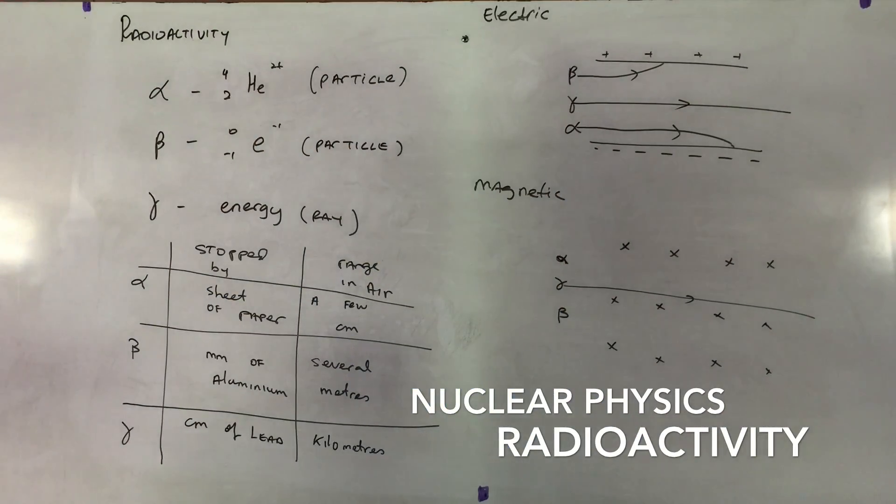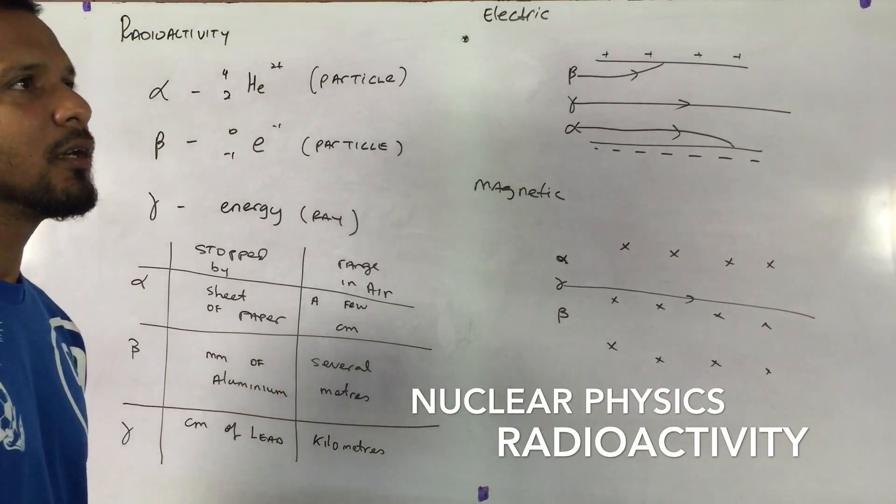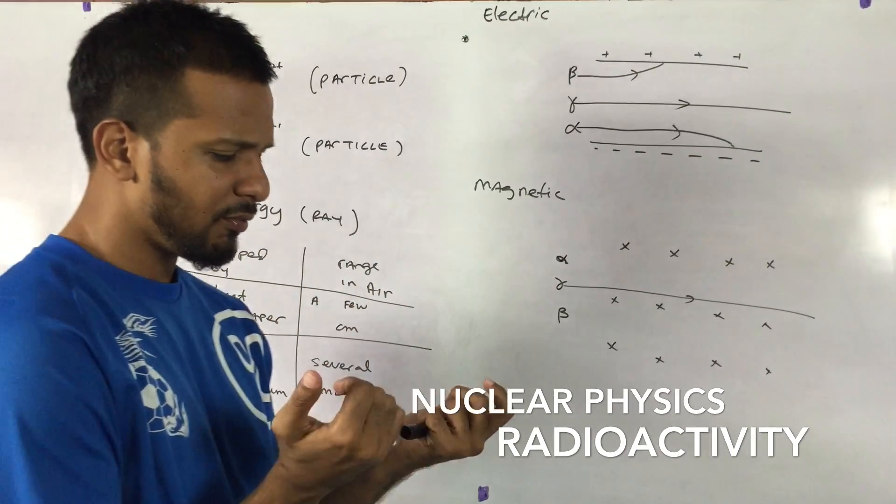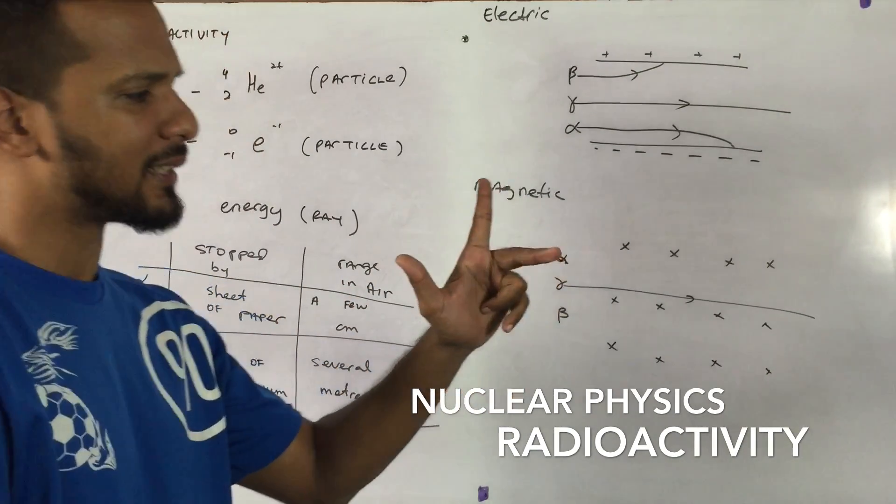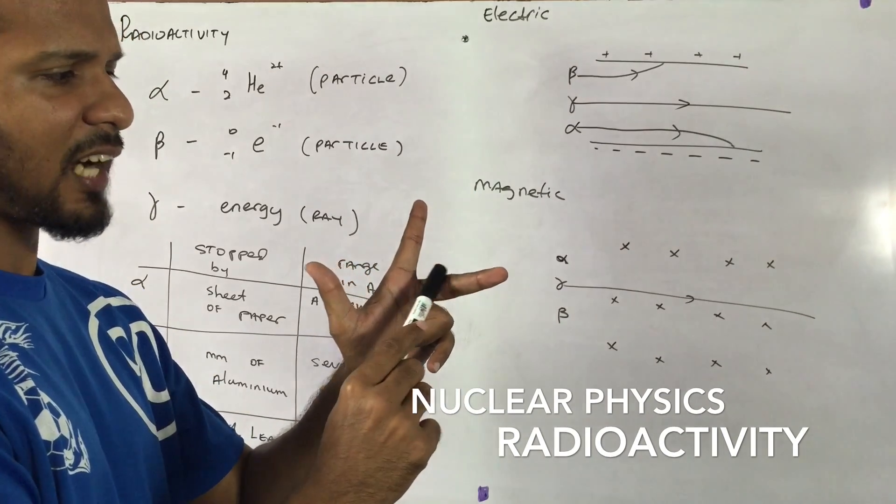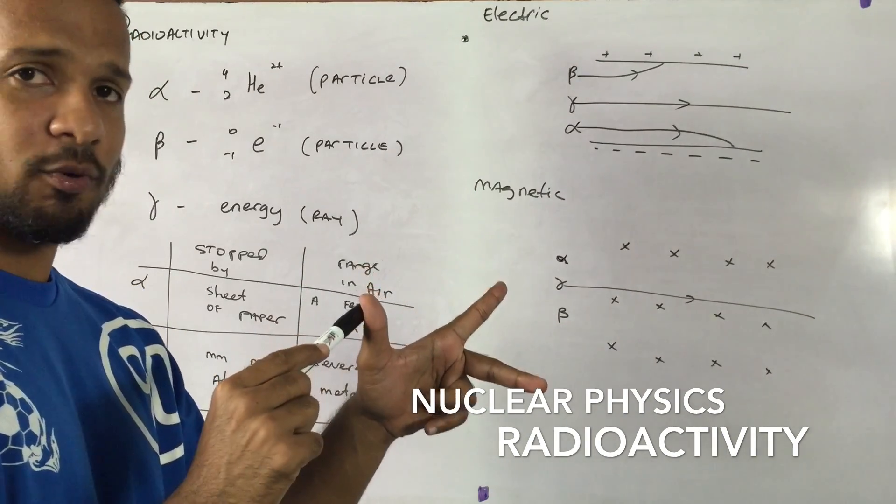Alpha particle. An alpha particle is a positive charge. Try to remember when we looked at Fleming's left hand rule. Fleming's left hand rule showed that in the presence of a magnetic field, a current carrying conductor would experience a force.